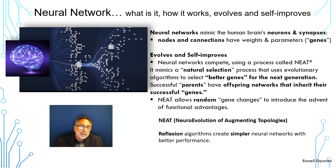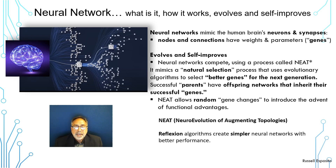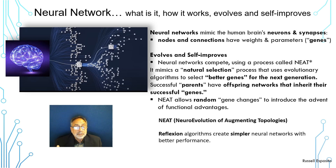How does a neural network evolve? If you look at the graphic on the left-hand side, you can see lots of neural networks mimicking the brain. Neural networks compete using a process called NEAT. It mimics a natural selection process that uses evolutionary algorithms to select better genes for the next generation of neural networks. Successful neural networks are combined, and they have offspring networks that inherit their successful genes.